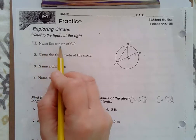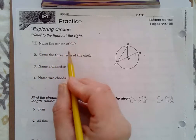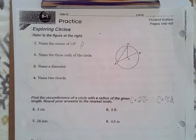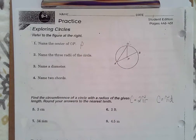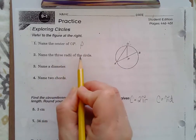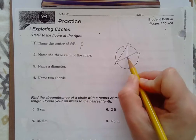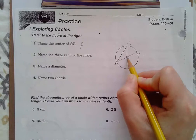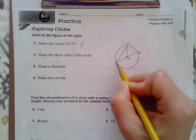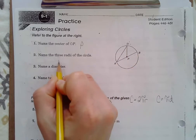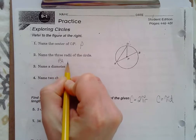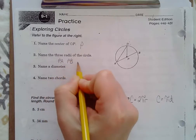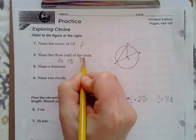We're going to name the center of circle P. Well, it kind of even just tells you that point P is the center. We want to name three radii. Remember, a radius is a segment that has one end point at the center and another on the circle. So our three are going to be PA, PB, and PD, all segments.